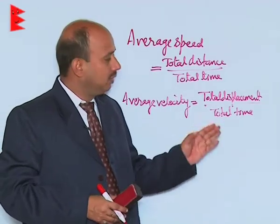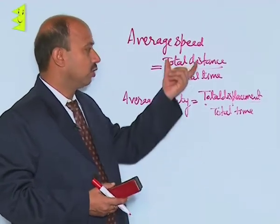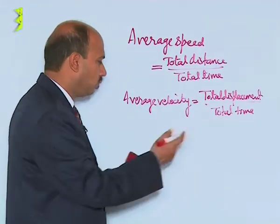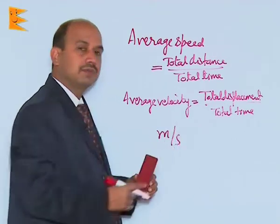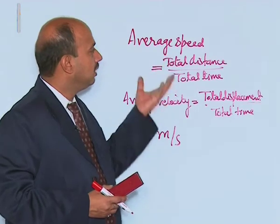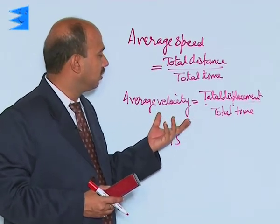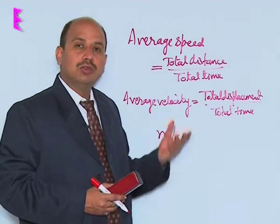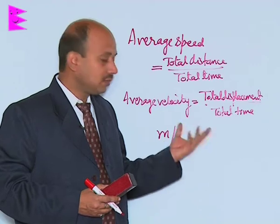Now, looking at average speed and average velocity: average speed is total distance upon time, and average velocity is total displacement upon total time. Both have the same unit, that is meter per second. But total distance can never be zero, so average speed cannot be zero and cannot be negative. Whereas displacement can be zero, so average velocity can also be zero.